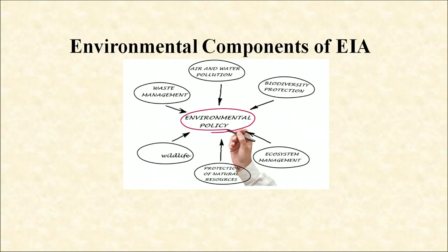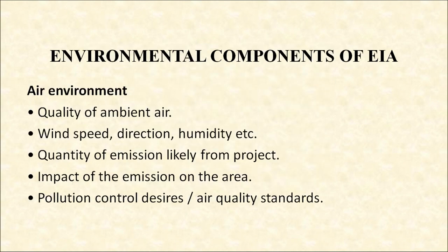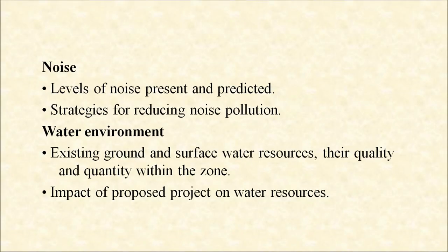Now we will discuss the environmental components of EIA. EIA looks at various components of the environment such as air, water, land, biological and so on. For air environment: quality of ambient air, wind speed, direction, humidity; quantity of emissions likely from projects; impact of emissions on the area; and pollution control measures or air quality standards. For noise: levels of noise present and predicted, and strategies for reducing noise pollution.